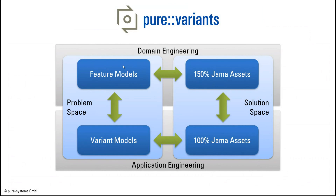In a feature model, you also need to put information about interdependencies between features. If you select one feature, is another feature required in combination to make this work? Or are there certain features conflicting each other, where you can only select one of them for a specific variant? Besides functionalities, you can also have your markets as features in a feature model, to express that you want to deliver certain variants to a certain market. Therefore, you might have to follow different standards, which might have impact on your solution assets including your requirements or test cases, or you may want to only provide certain functionalities in certain markets.